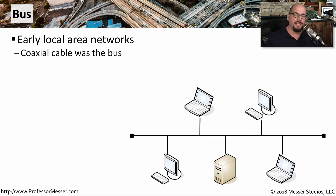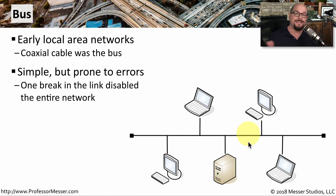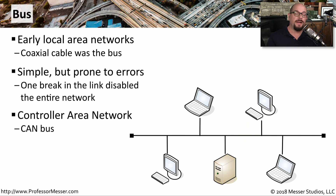A bus topology is a connection that all other devices connect to. A very common use of bus technology was in early networks, where we would have a single coax cable and connect all devices onto it so they could communicate with each other. This was an easy network to implement, but if you did have a break in that cable it would disable the entire network. One place you might find a modern bus technology is in your automobile — this is called a controller area network, or CAN bus, where all of the internal devices inside your car connect to this single bus and communicate between each other.